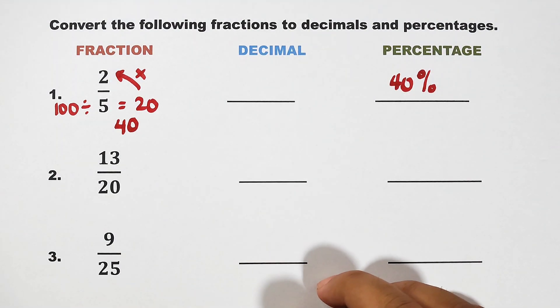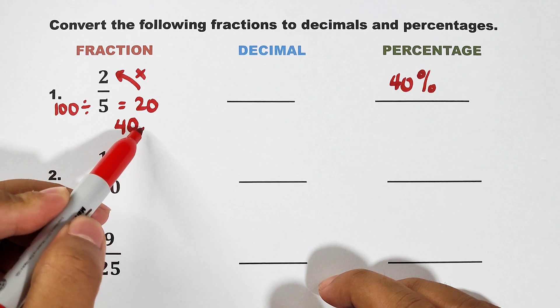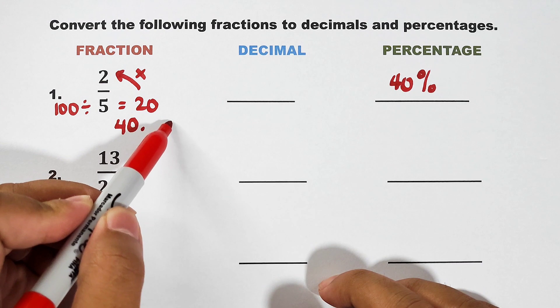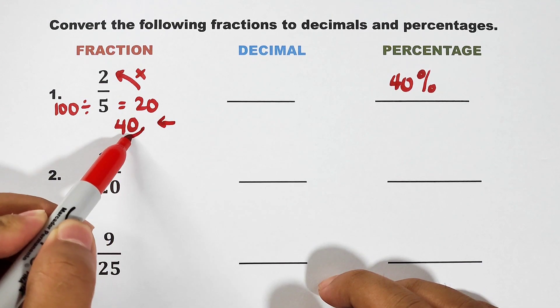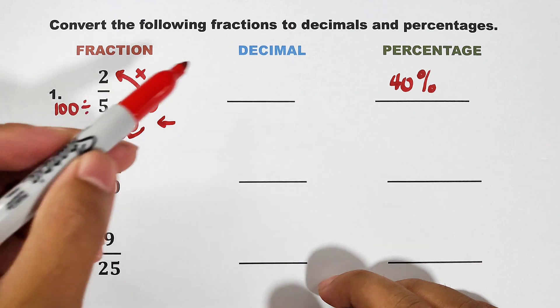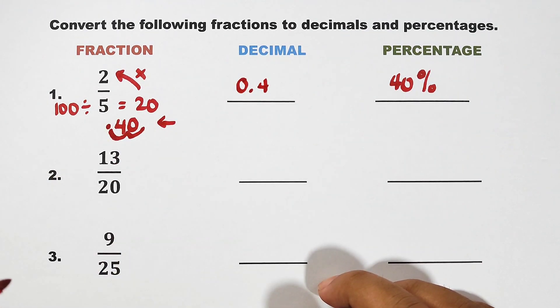Now, what about the decimal? For the decimal, since this one is 40, we will move the decimal point here 2 units going to the left. 1 and 2. And as you can see, that is 0.4 or 0.40.